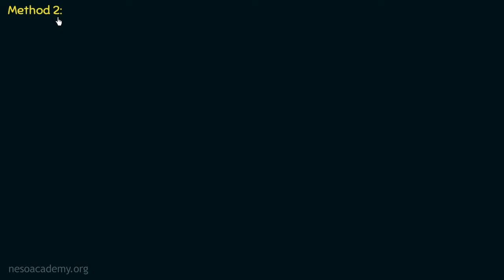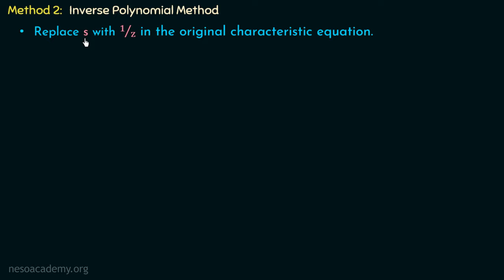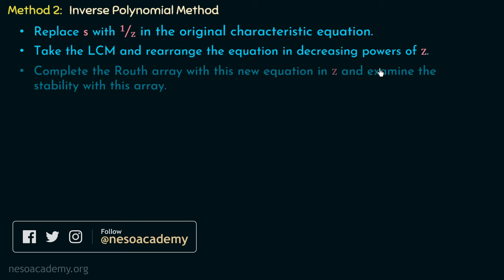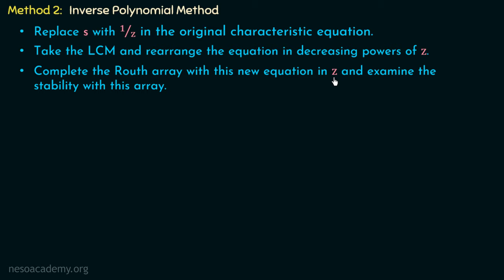Let us now move on to Method 2 to overcome Special Case 1 of RH criteria. We call this the inverse polynomial method. In this method, we replace the terms of S in the characteristic polynomial with 1/Z. After replacing S with 1/Z, we take the LCM and rearrange the equation in decreasing powers of Z, then complete the Routh's array with this new equation and examine stability.